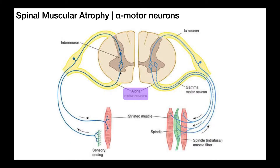The alpha motor neuron exits the spinal cord through the ventral root. The structure shown in yellow is the ventral root. Up here is the dorsal root, and the dorsal root and the ventral root eventually fuse — the point where they fuse is the actual spinal nerve.